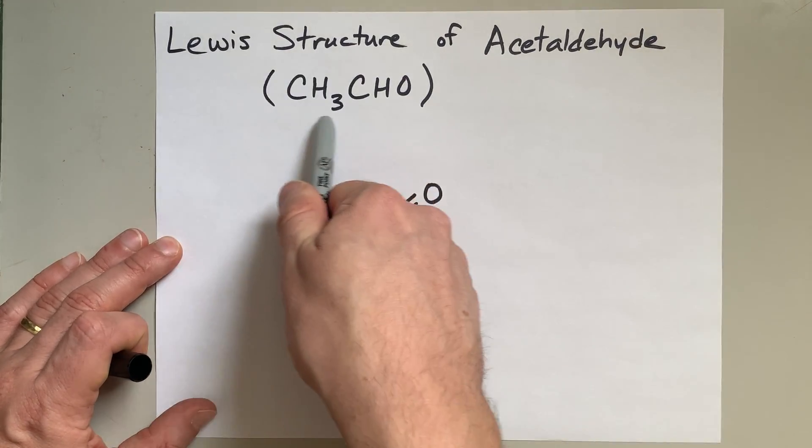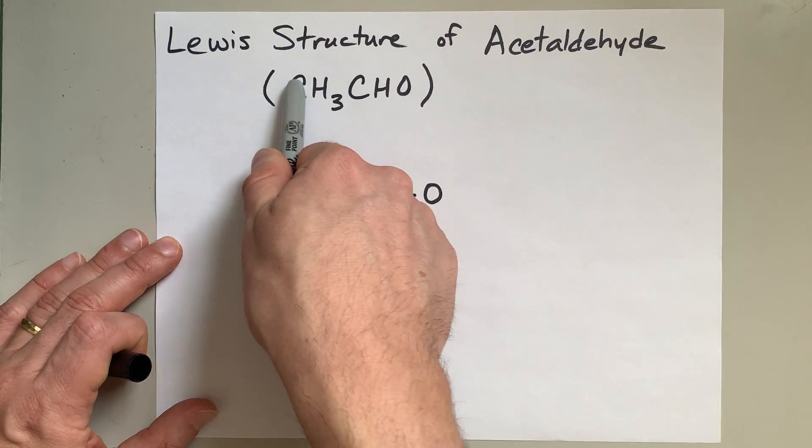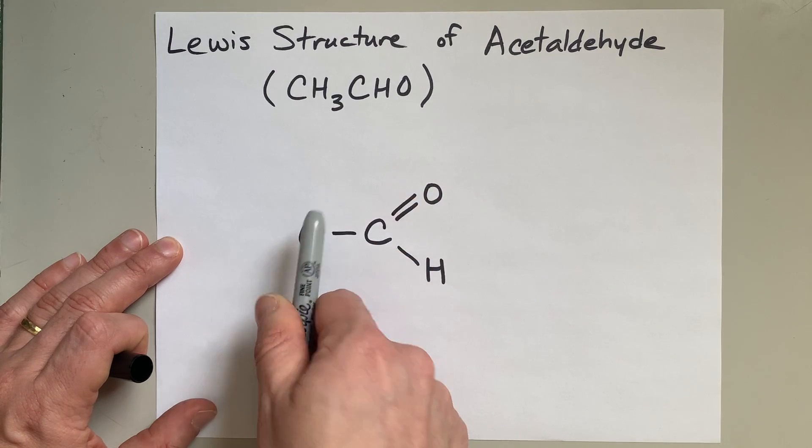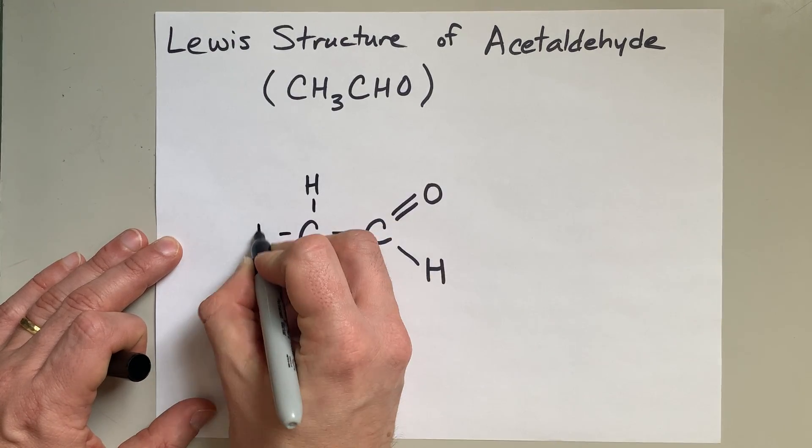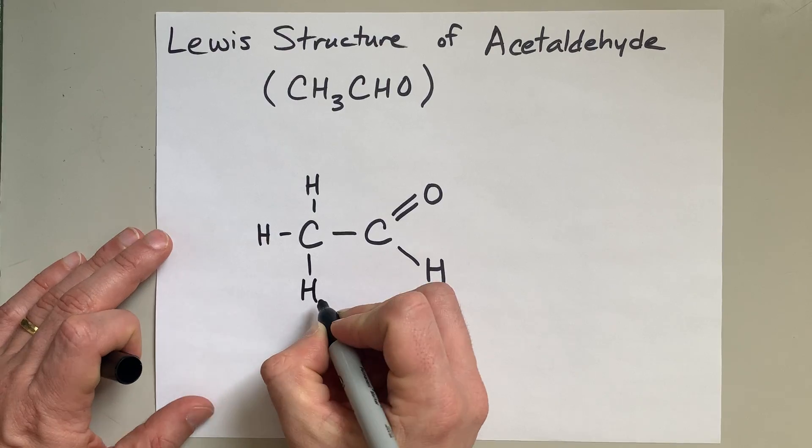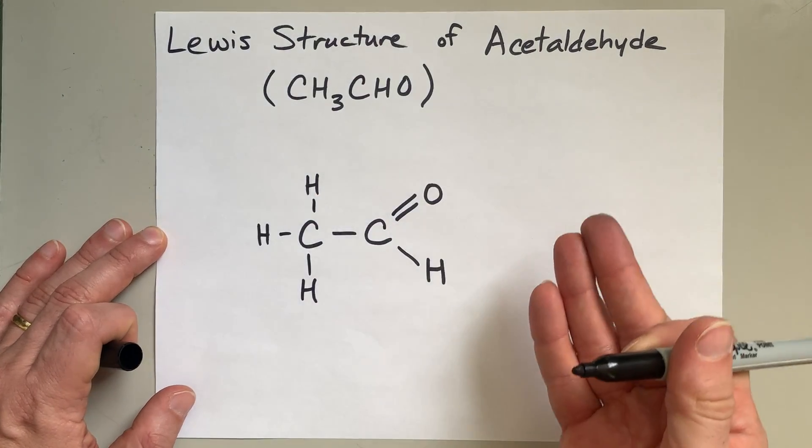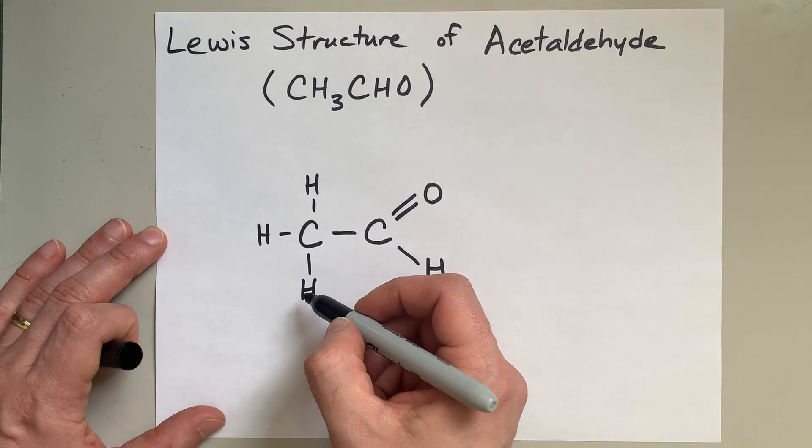Then you've got to figure out what is also connected to the rest of the chain. Here it's easy. That end carbon has three hydrogens on it, so you draw a hydrogen there, a hydrogen there, and a hydrogen there.